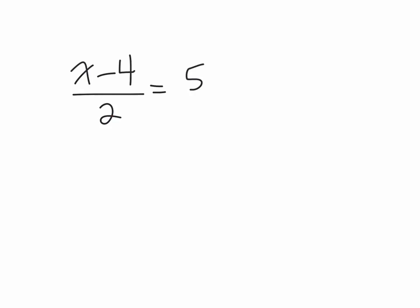So the first thing I'm going to do is I'm going to look at the operation that's happening here. So this is division. The opposite operation of division is multiplication. So I'm going to multiply by 2 and multiply by 2. So what you do to one side, you must do to the other. That means that these 2s cancel out. I know that 5 times 2 is 10. x minus 4.